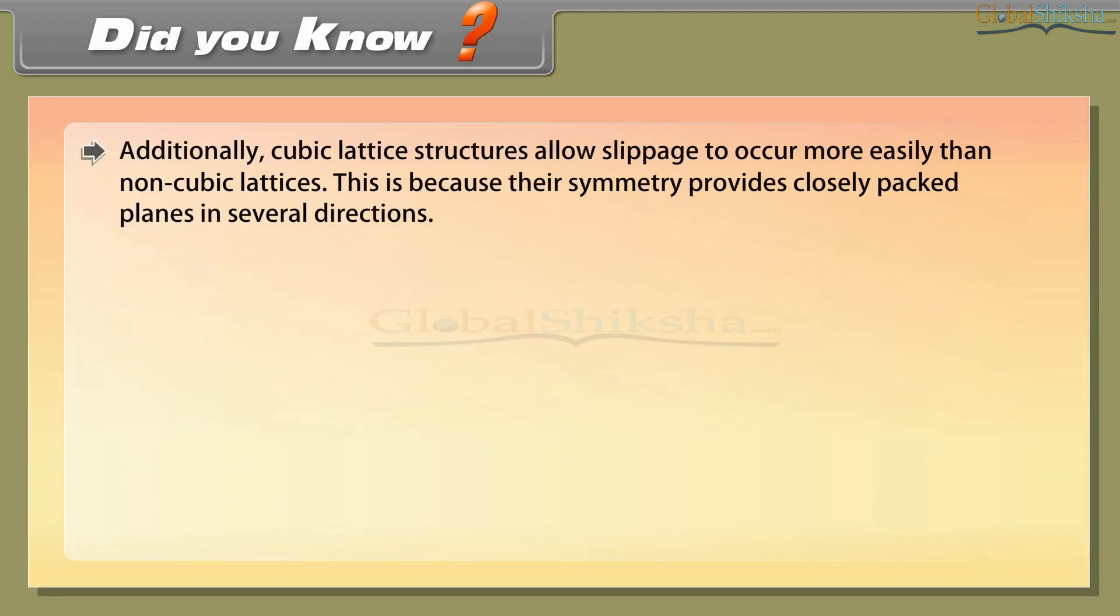Additionally, cubic lattice structures allow slippage to occur more easily than non-cubic lattices. This is because their symmetry provides closely packed planes in several directions.